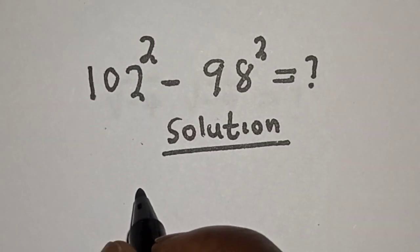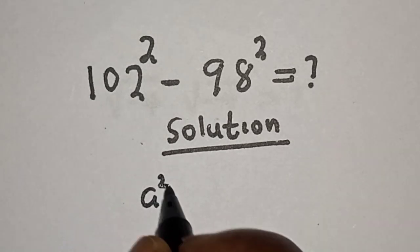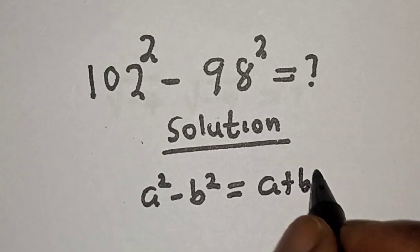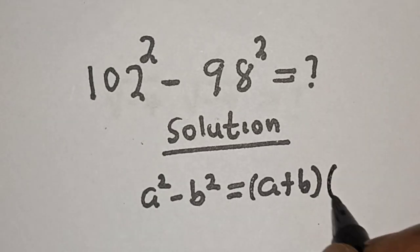Then take note of this rule that a square minus b square is equal to a plus b bracket a minus b.